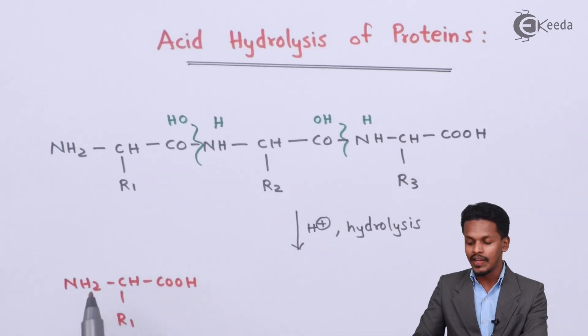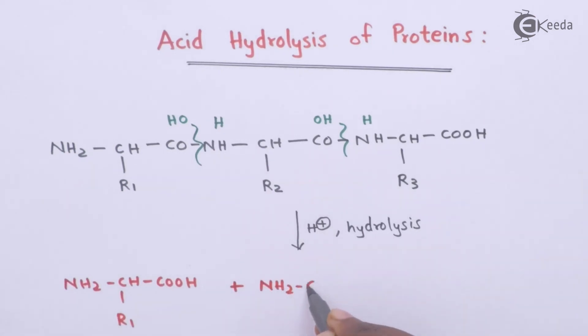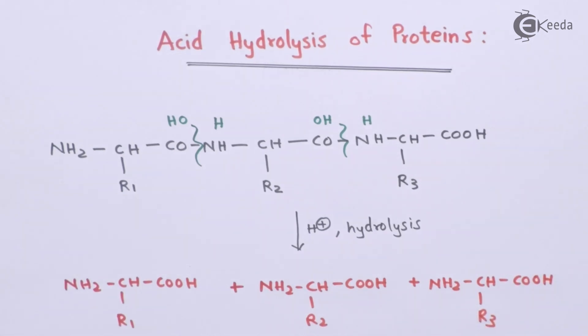The next product is NH2-CH(R2)-COOH, plus we could get NH2-CH(R3)-COOH. So here I have given a reaction where we have obtained three amino acids.